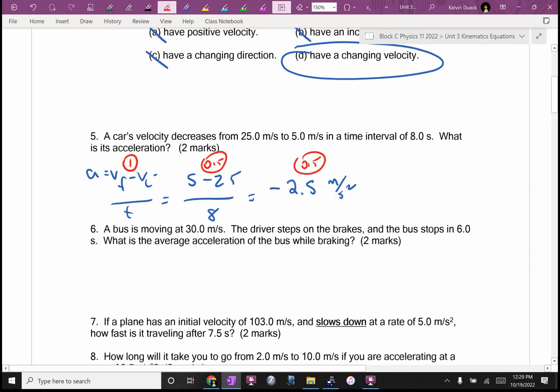I'm going to go A equals VF minus VI over T. It's going to be 5 minus 25 all over 8. It's negative 2.5 meters per second squared. If you got that right, 2 out of 2. Otherwise, I would give you one mark for the equation, half mark for the numbers, half mark for the answer. If you're at this stage still unsure of the units, you need to have the units in your brain by tomorrow.